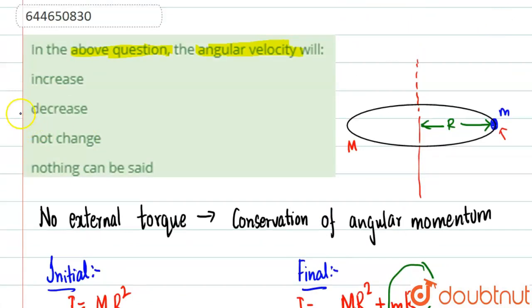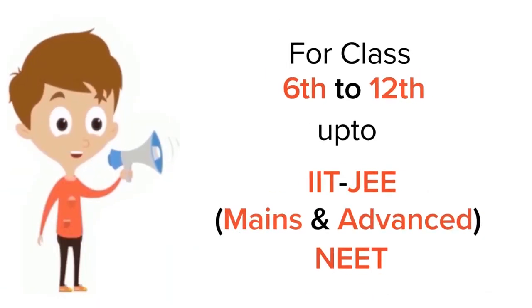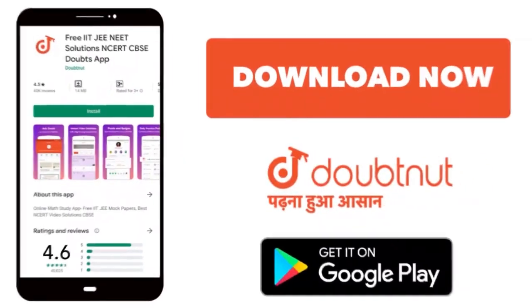So in the above equation, what will happen: angular velocity decreases. Thank you. For class 6 to 12th, IIT-JEE and NEET level, trusted by more than 5 crore students, download Doubtnut app today.